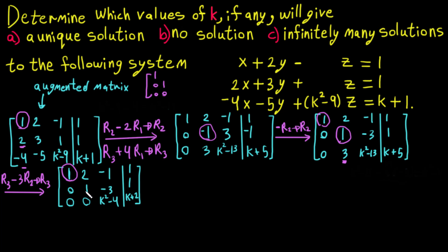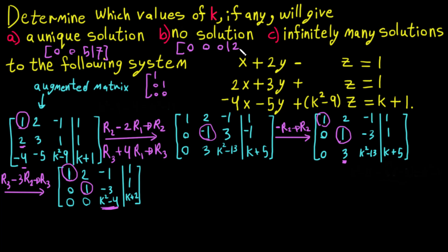Now we need to determine the solution type based on this final row. A unique solution occurs when the last row looks like [0, 0, nonzero | nonzero] — for example [0, 0, 5 | 7] — because you can divide to get a leading 1. No solution occurs when the last row is [0, 0, 0 | nonzero]. Infinitely many solutions occur when the last row is [0, 0, 0 | 0].